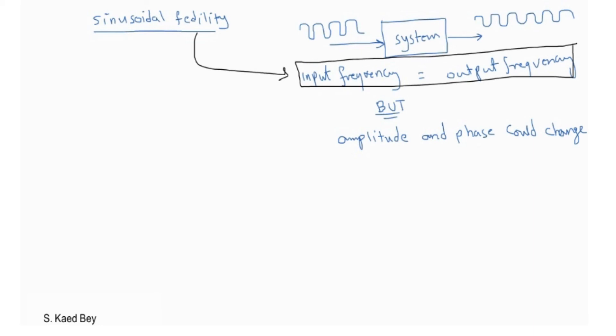Later, we will discuss Bode plots, and we will study how the gain and phase may vary with the frequency. So, in general, if an engineer is trying to determine if an electronic device is linear, perhaps the engineer would attach a sine wave generator to the input of the device, and an oscilloscope to the output. If the engineer sees all the three properties discussed before, then perhaps, with a level of confidence, we could say that the system is linear.